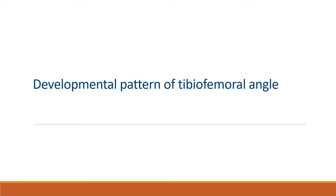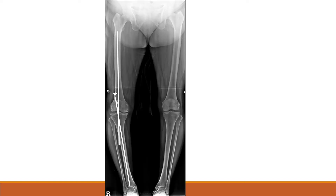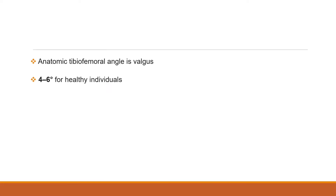Today we will discuss the developmental pattern of the tibiofemoral angle. The tibiofemoral angle is the angle between the anatomical axis of the femur and the anatomical axis of the tibia, as shown in this image. The normal tibiofemoral angle is a valgus angle of 4 to 6 degrees.